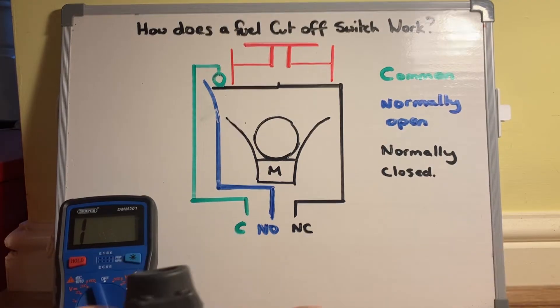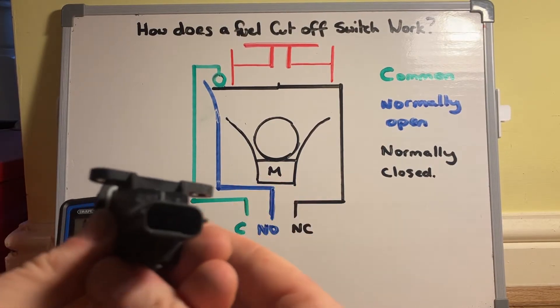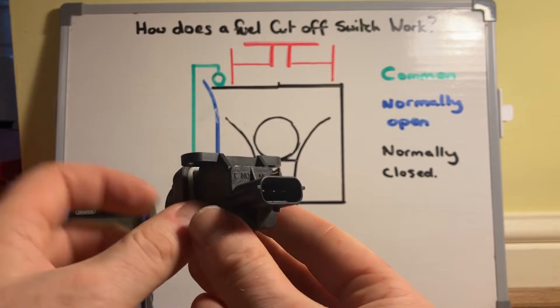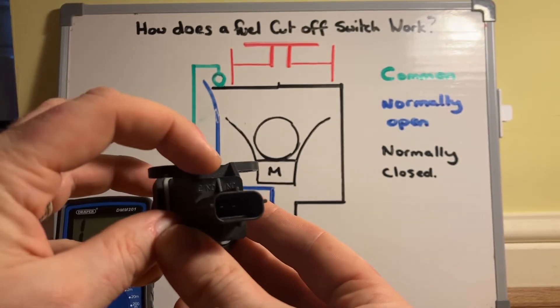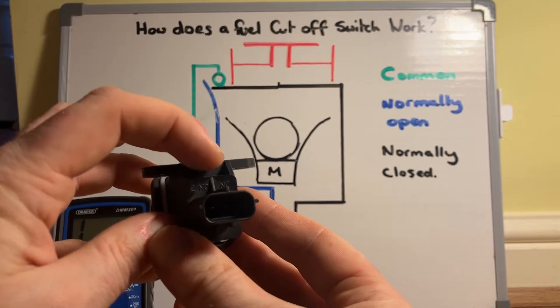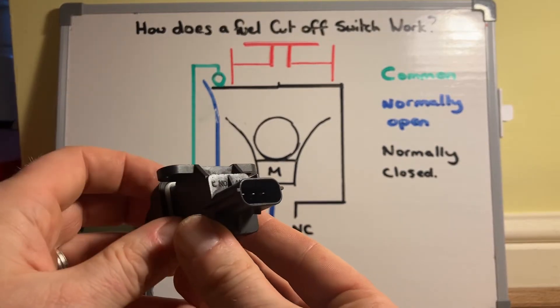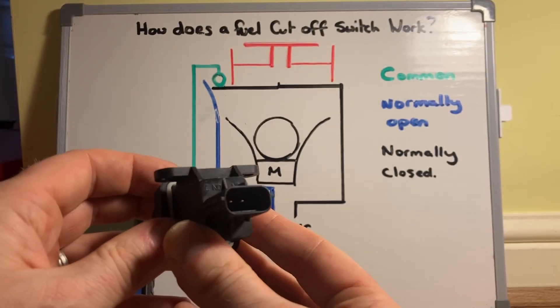So what's happening inside? We've got three pins here and they are stamped as to what they are: C for common, which I've put on the board behind us as well, NO for normally open, and NC for normally closed. If you can see the light there, there's three pins there, one for each.